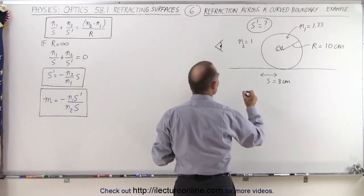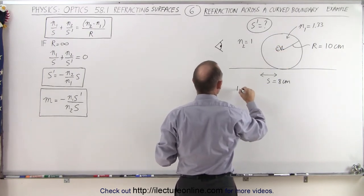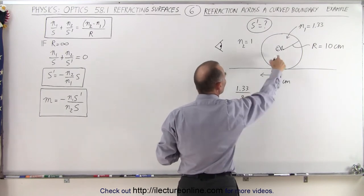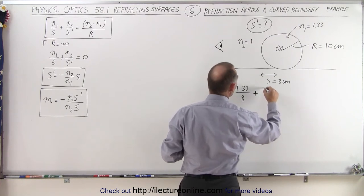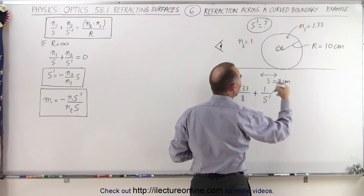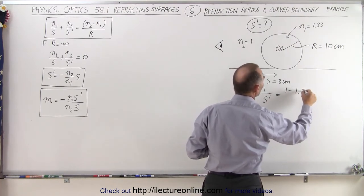N1 is 1.33. That's the same index of refraction where the object is at. So 1.33 divided by 8, which is the distance from the object to the boundary, plus N2, which is 1, divided by S prime, which is what we're looking for, which is equal to N2, which is 1, minus N1, which is 1.33.